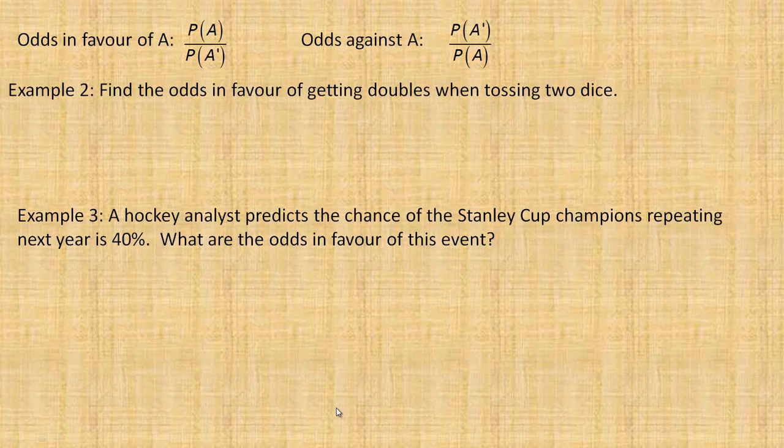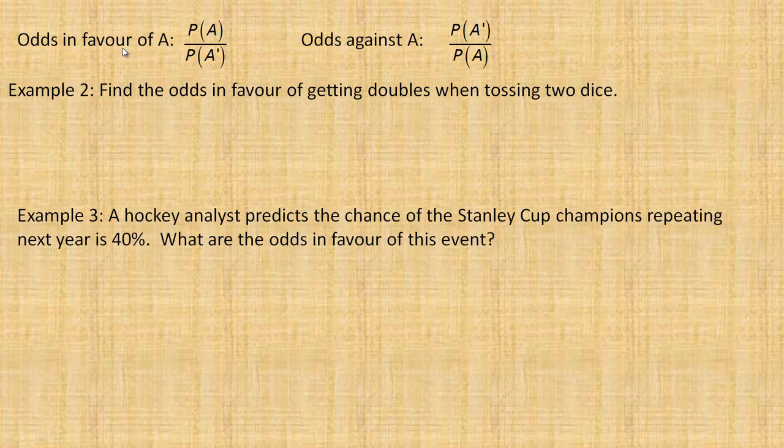A little bit about odds here. You can calculate the odds in favor of something happening, and also the odds against something happening. So the odds in favor of event A is the probability of A occurring divided by the probability of its complement. And the odds against is just the reciprocal, the probability of A complement divided by the probability of A.